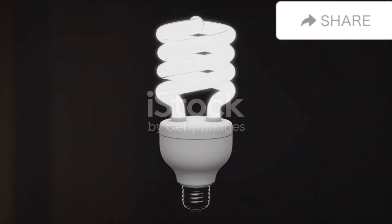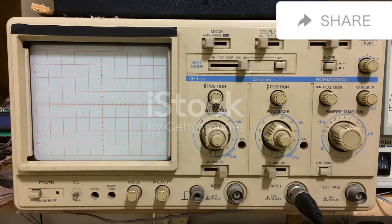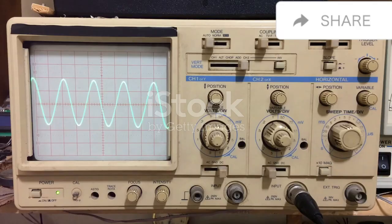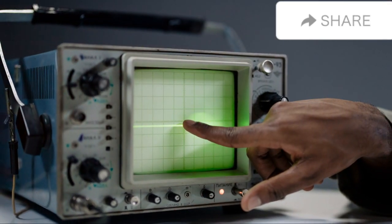Deflection plates guide the beam to the phosphor screen, which glows to display your waveform. In action, the cathode heats up, emits electrons, and the anode accelerates them into a beam.